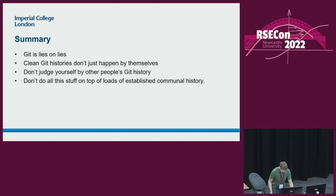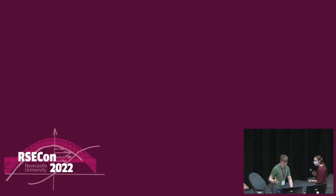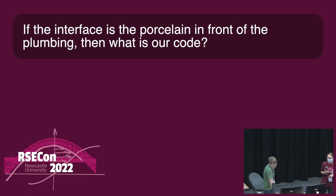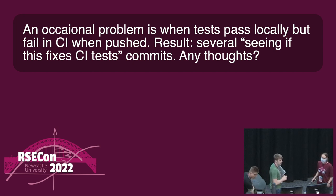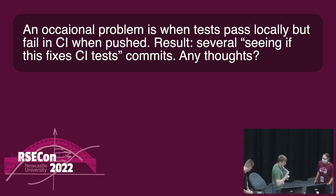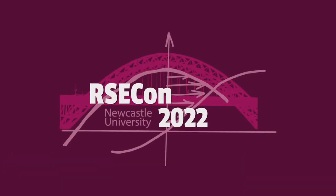I think I'm basically out of time. Git is lies. For a couple of questions — the occasional problem of tests failing in CI: I think that's where the force pushing comes in. You can just amend things and then force push, and that should remove the failed test from the history. Again, make sure you do it before your PR. Yeah. Thank you.